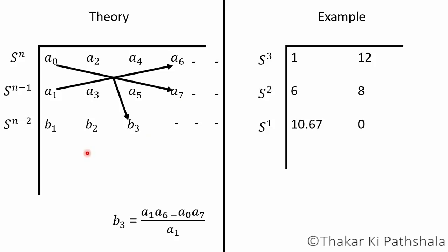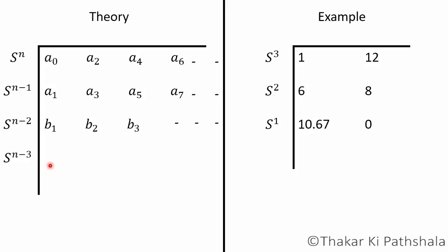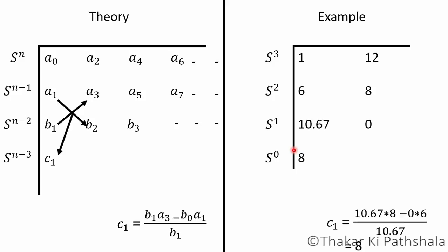In order to get the next row we will decrease the power of s by 1. Now to write the value of c₁ we will do the same thing. The whole process starts from b₁. So the value of c₁ will be like multiplication of b₁ and a₃ minus multiplication of a₁ and b₂ divided by b₁. For this example the value of c₁ will be multiplication of 10.67 and 8 minus multiplication of 0 and 6, which is obviously 0. And if we divide this whole thing with 10.67 we will get the value 8. So for this example we have done it, we got here s⁰ or we can say 1.